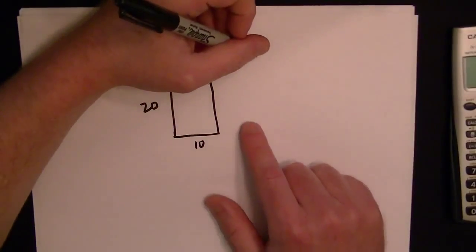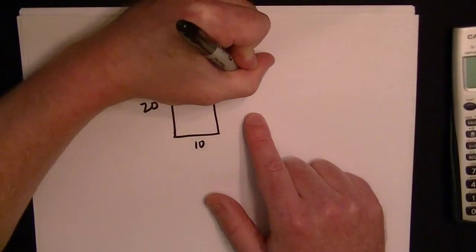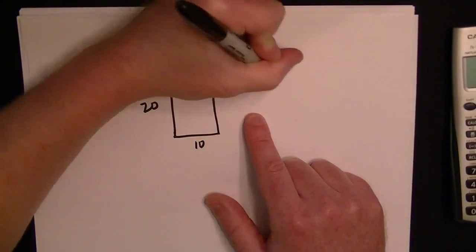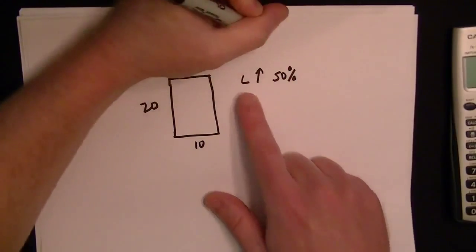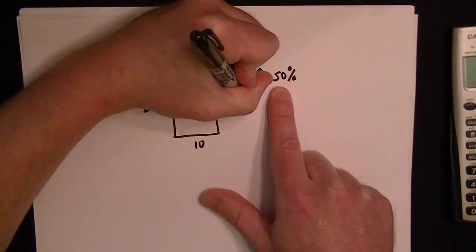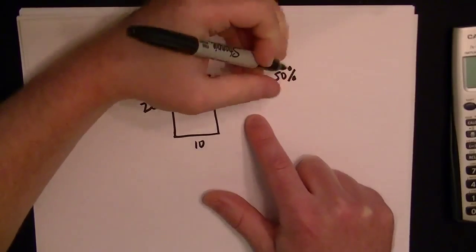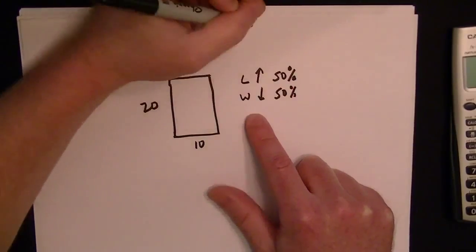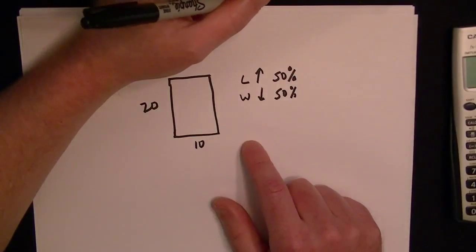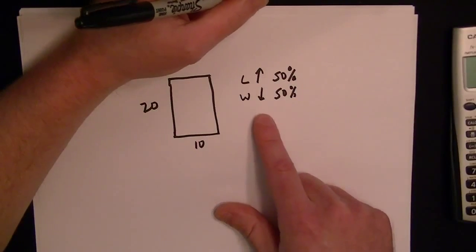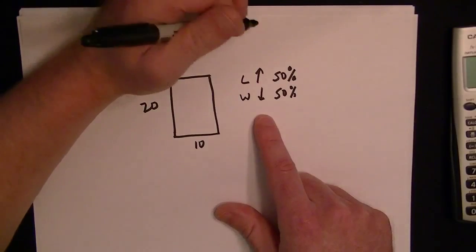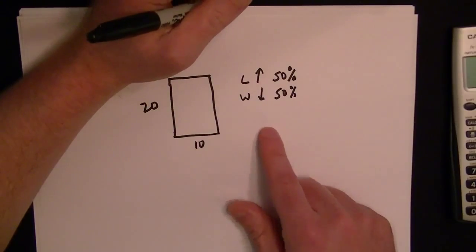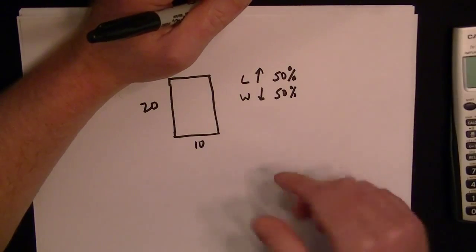Now they're saying the length increases by 50%, so we'll shorthand like this: length goes up by 50%, and the width goes down by 50%. They want to know how the area has changed. Is the area of the new garden more or less, or is it the same? How much is the difference?